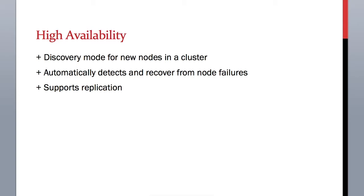Elasticsearch offers a high availability tool, which is a very important feature for mission critical use cases. Each node on a network or cluster will have one or two replicas, which are exact copies of the primary node. If the primary node fails for some reason, Elasticsearch will automatically detect this and assign one of the replica nodes to work as the primary node and take charge from there on.